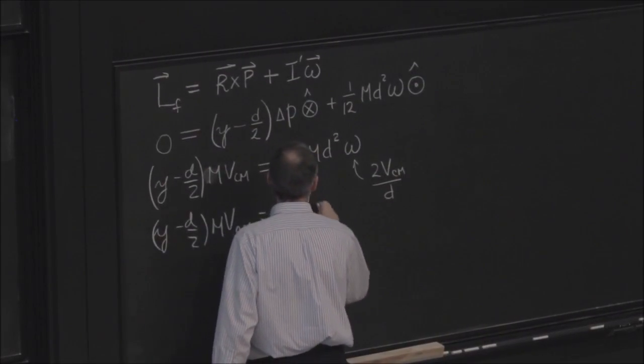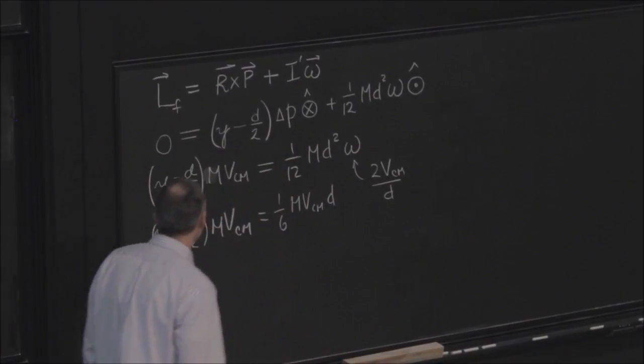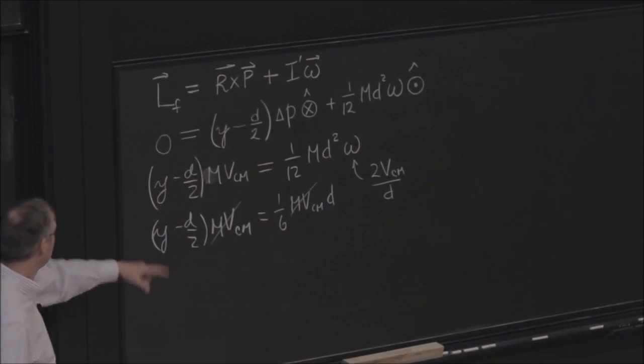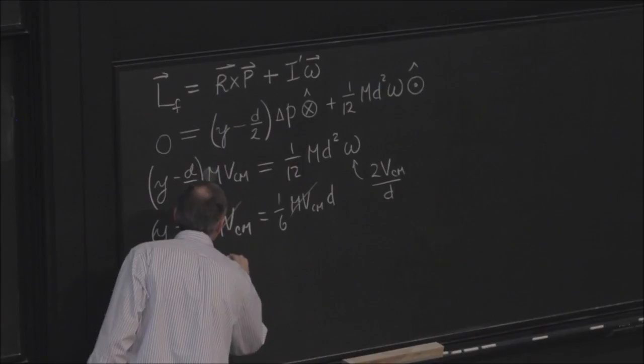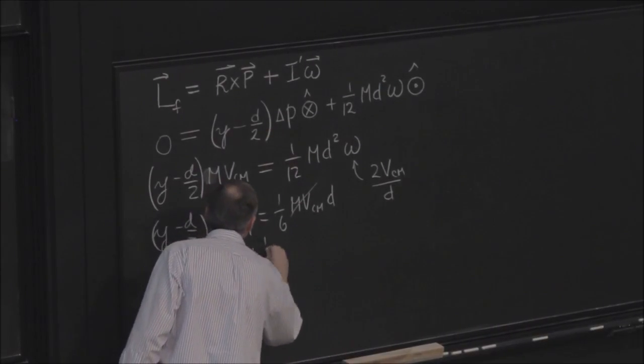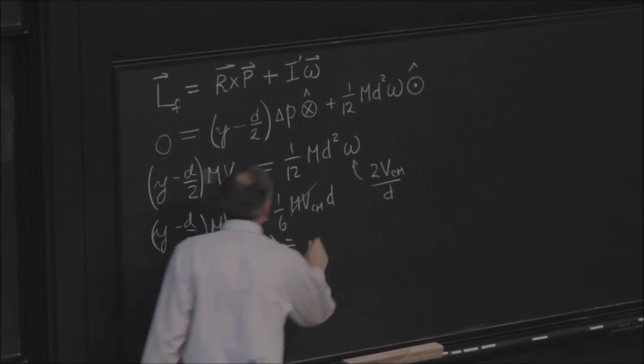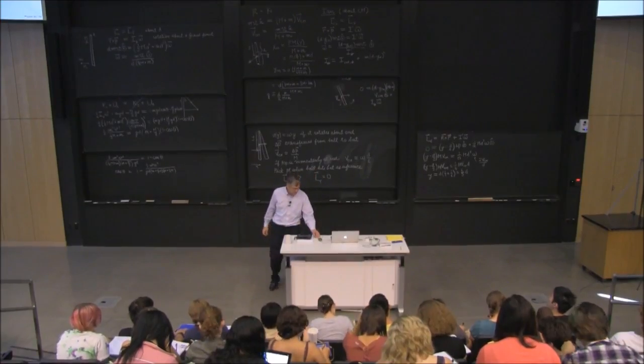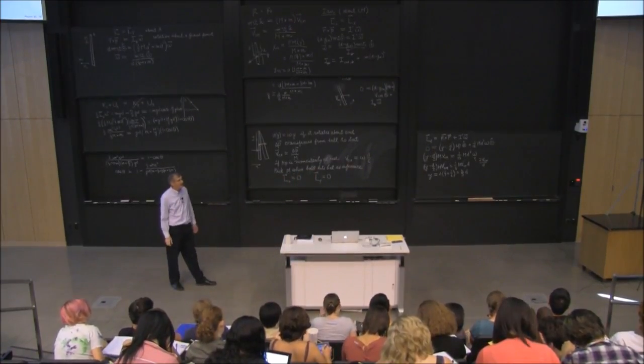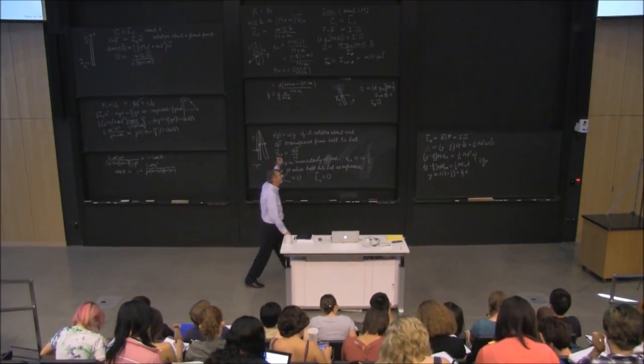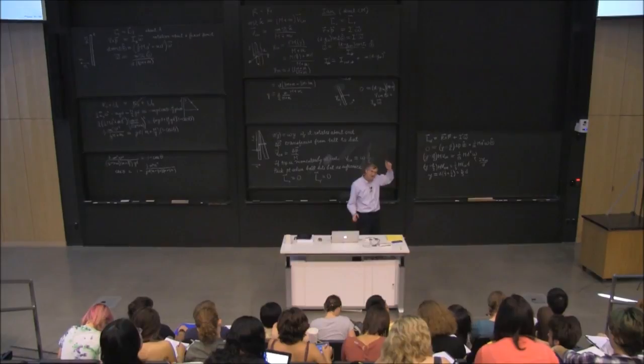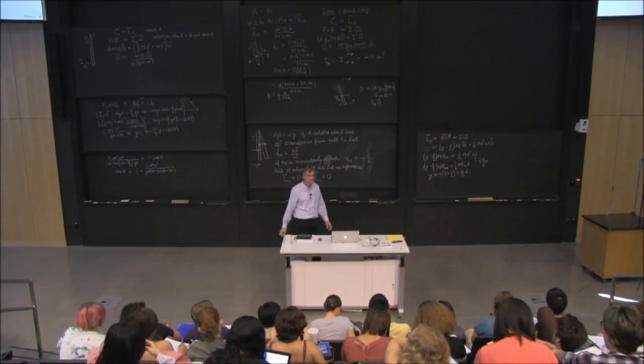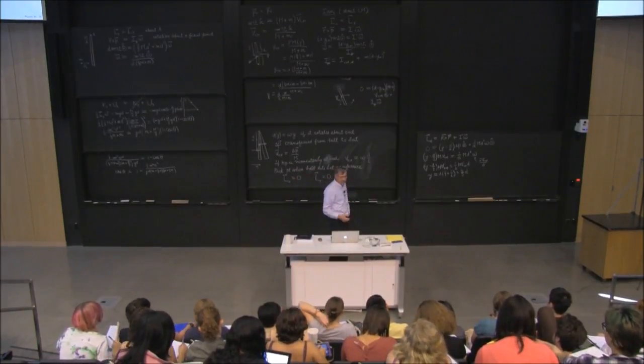So wipe these things out and throw d over 2 to the other side. And we get y is equal to d times 1 half plus 1 6th, which is 2 thirds. So if we hit the rod 2 thirds of the way down, the top will stay at rest, at least momentarily. Eventually, of course, it has to slide off. But momentarily, during the collision, there's no impulse at the top.